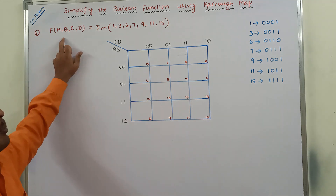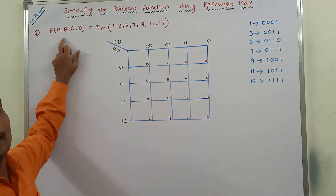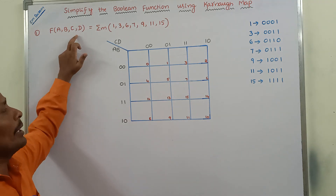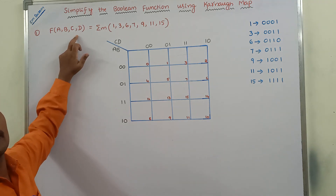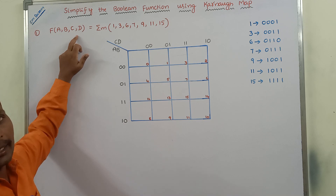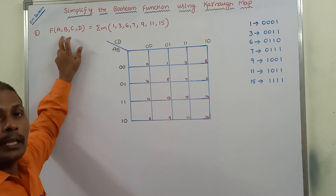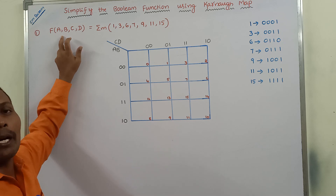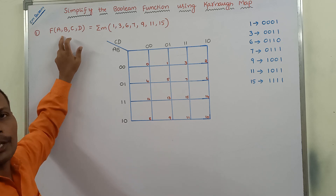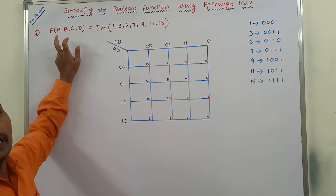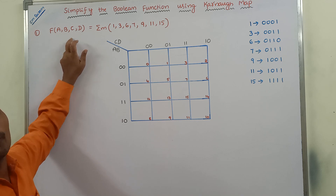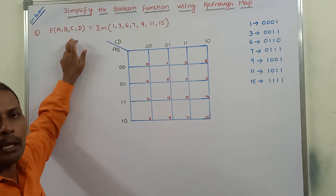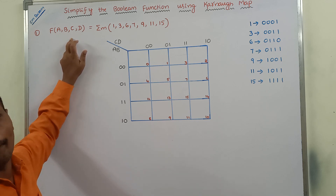The given boolean function contains four variables: a, b, c, and d. Whenever four variables are given in the boolean function, we have to use a four-variable Karnaugh map.